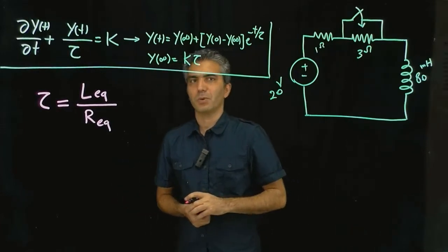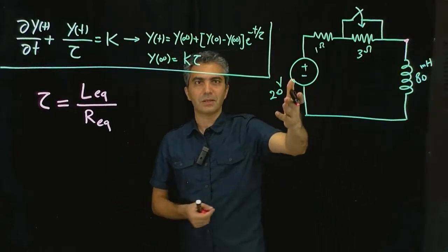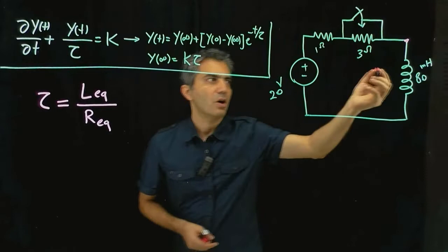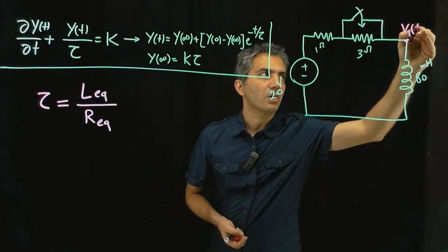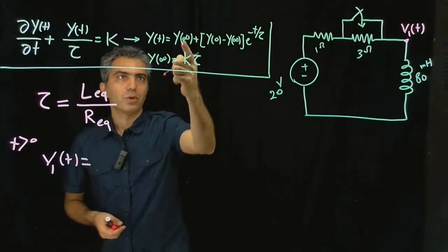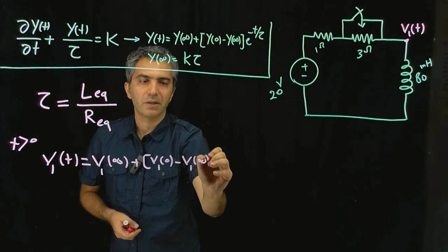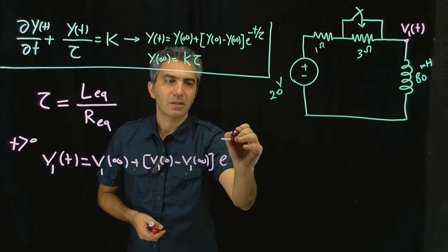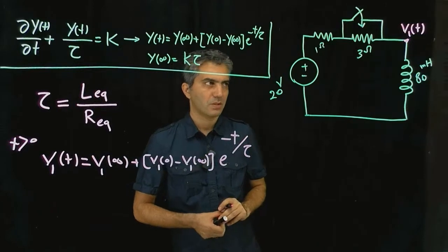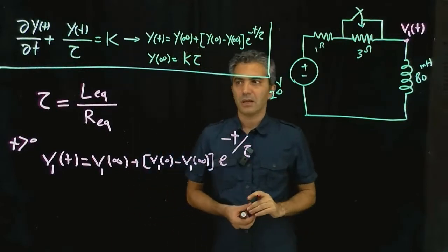Let's calculate the voltage V1(t). Since this is an RL circuit, for t greater than 0, V1(t) equals V1(∞) plus [V1(0) minus V1(∞)] times e to the minus t over tau, where tau is the equivalent inductance divided by the equivalent resistance. In this case, the equivalent inductance is just the inductance itself since there's only one inductor, and now we need to calculate the equivalent resistance.